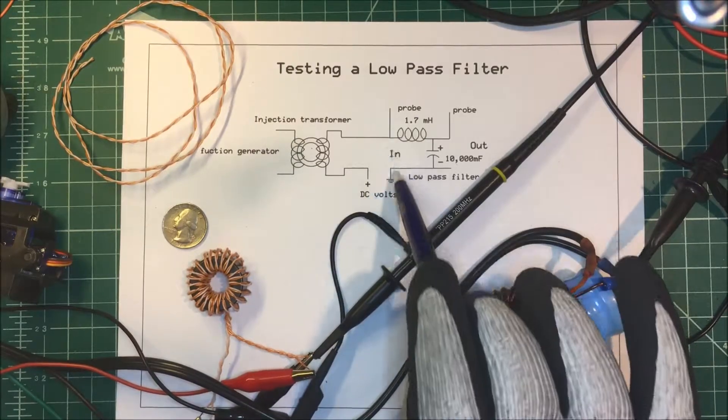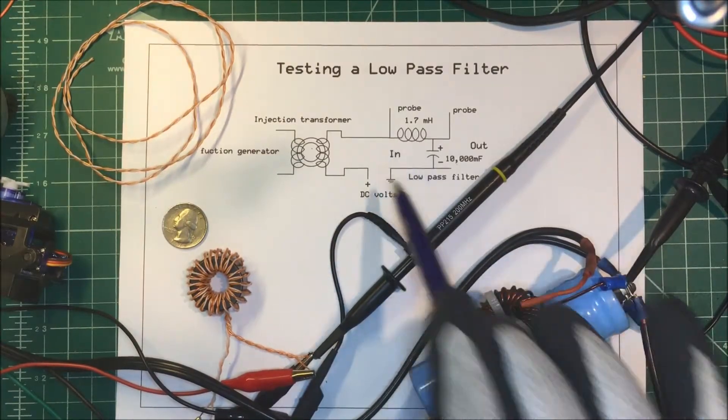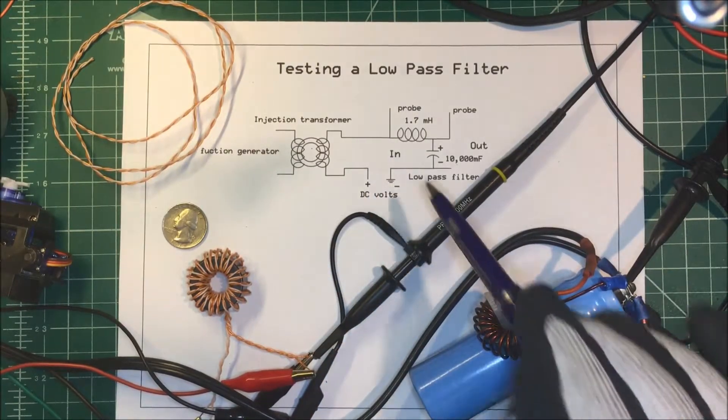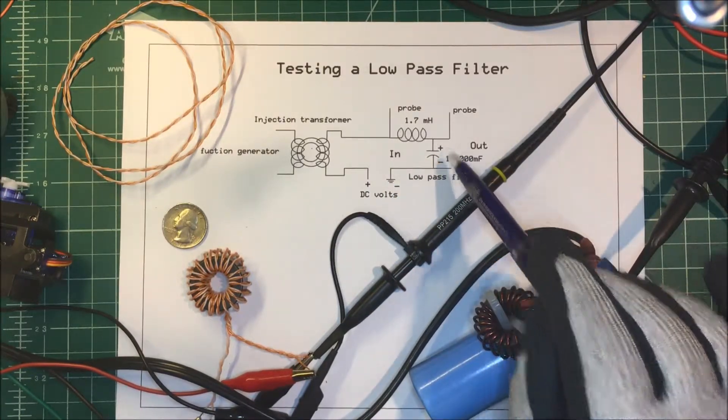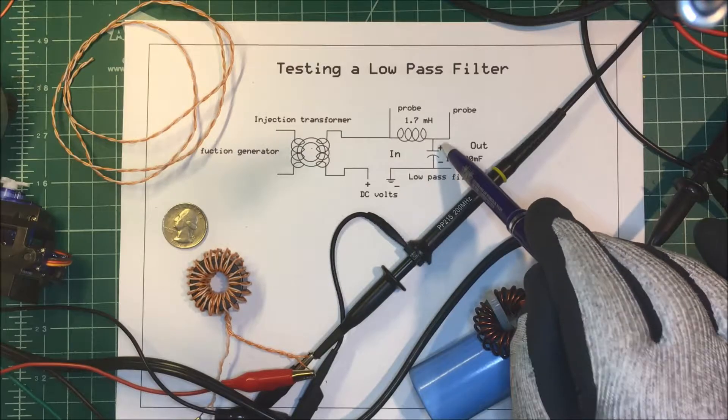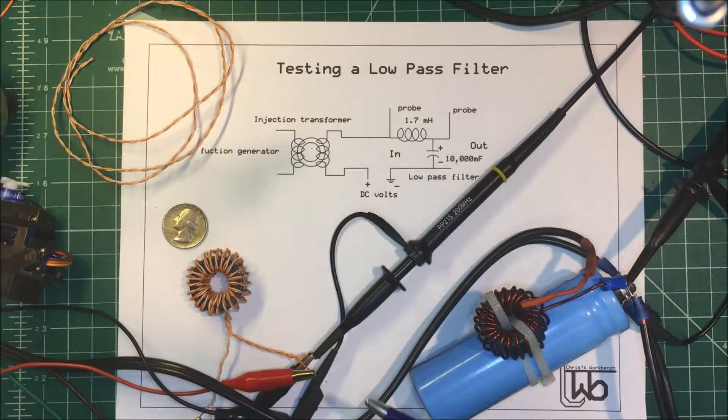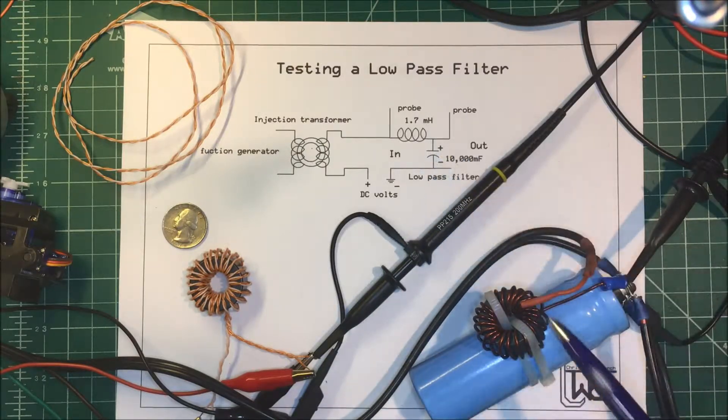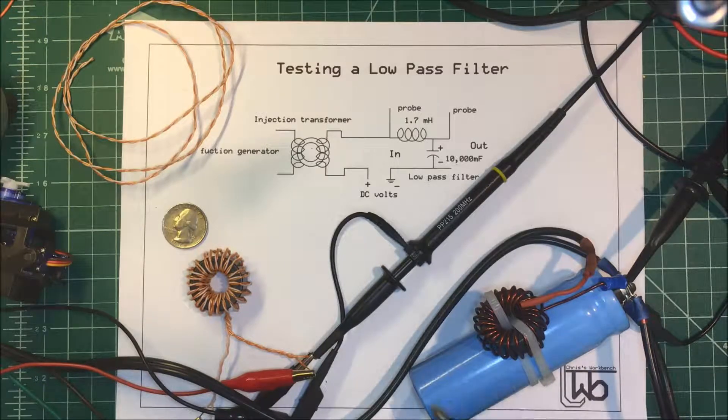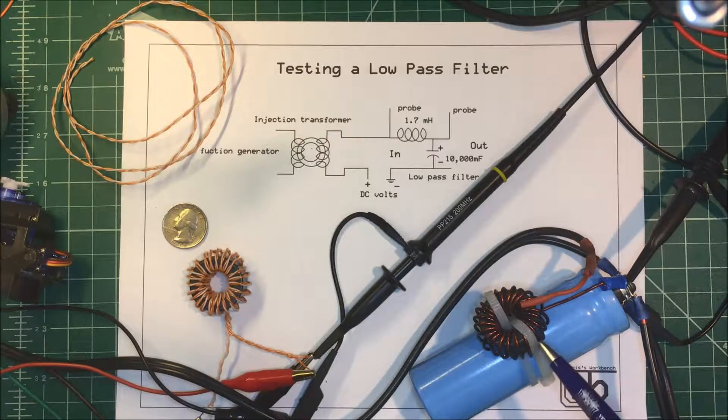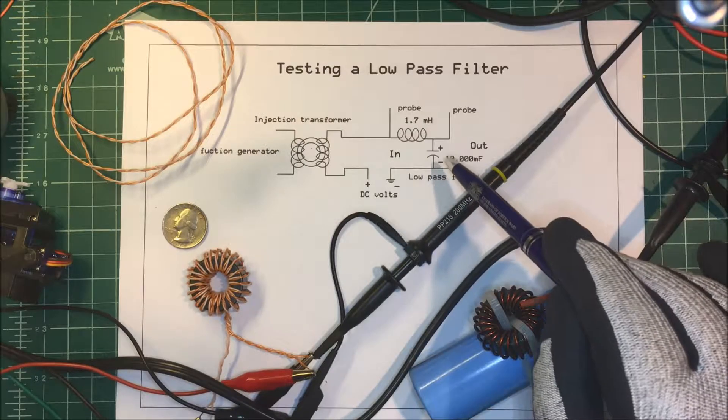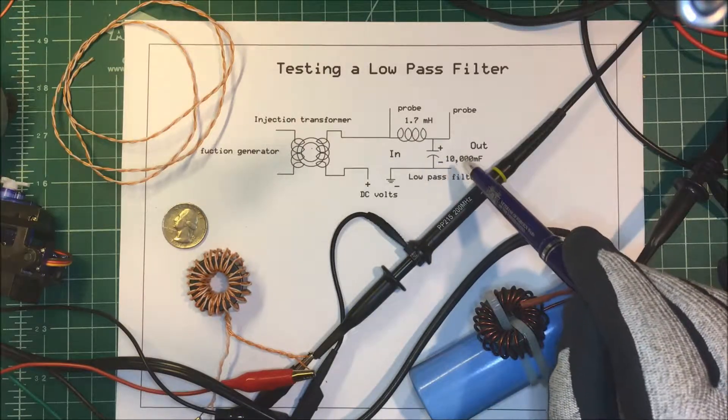But if I put my function generator directly across the input on my filter here, half the time I'd be reverse biasing my electrolytic capacitor, putting a negative signal on top here. It only takes about a volt and a half to degrade the cathode oxide layer in this aluminum wound capacitor, and even 0.5 volts will start to degrade it.